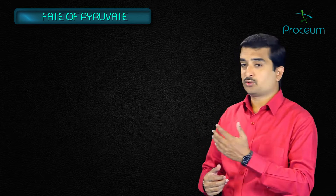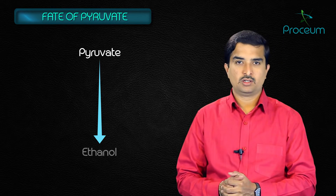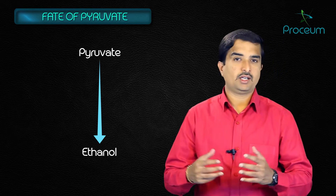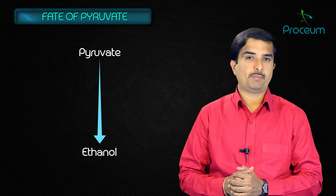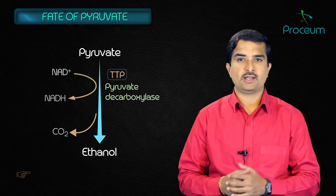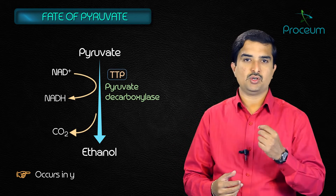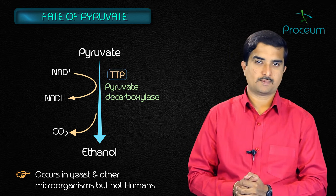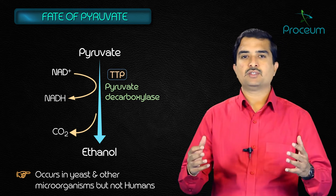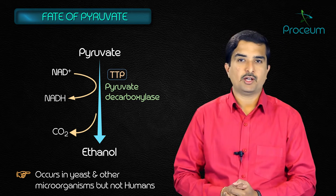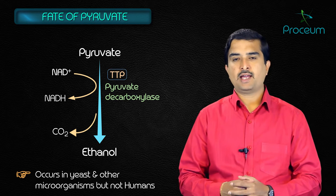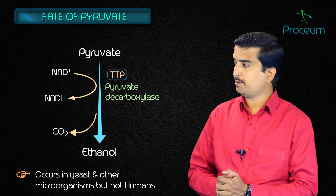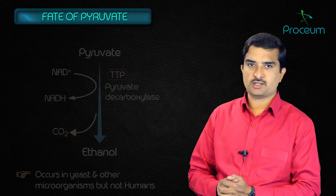The third fate is reduction of pyruvate to ethanol, which takes place in microorganisms. Decarboxylation of pyruvate by pyruvate decarboxylase occurs in yeast and certain other microorganisms but not in humans. The enzyme requires thiamine pyrophosphate as a coenzyme and catalyzes a reaction similar to that described for pyruvate dehydrogenase.